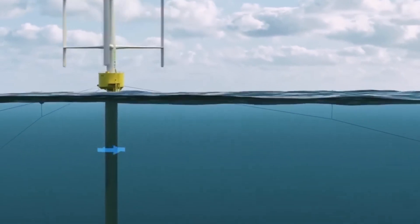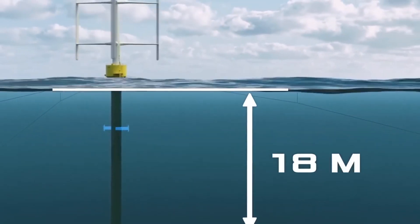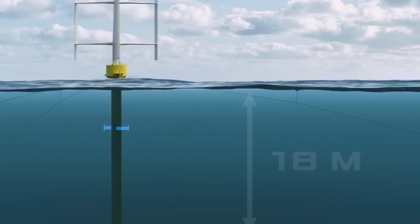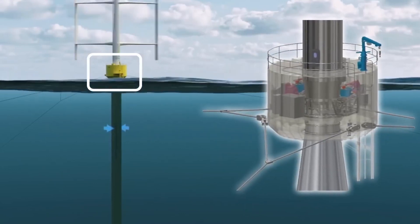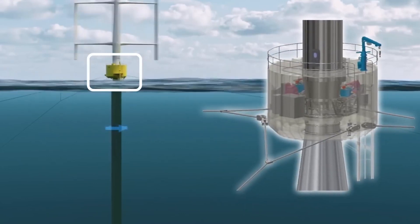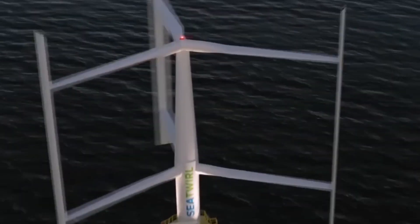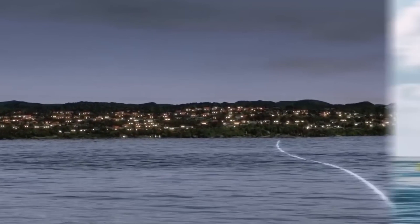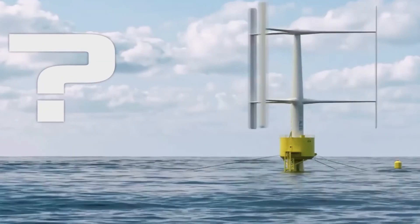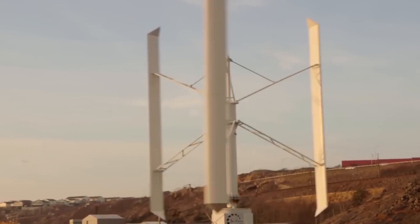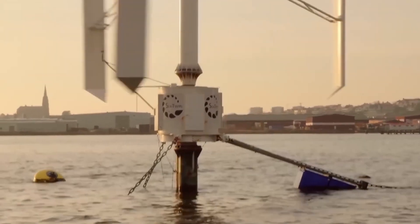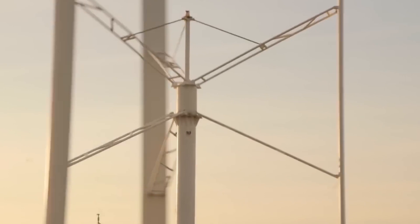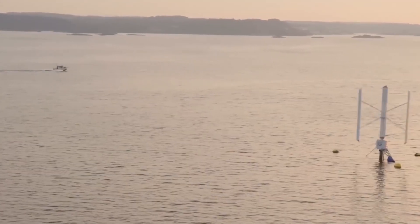Vertical axis turbines look like egg beaters. They have blades that are attached to the top and the bottom of a vertical rotor. The most common type of vertical axis turbine, the Darrieus wind turbine, named after the French engineer Georges Darrieus who patented the design in 1931, looks like a giant two-bladed egg beater. Some versions of the vertical axis turbine are 100 feet tall and 50 feet wide. Very few vertical axis wind turbines are in use today because they do not perform as well as horizontal axis turbines.